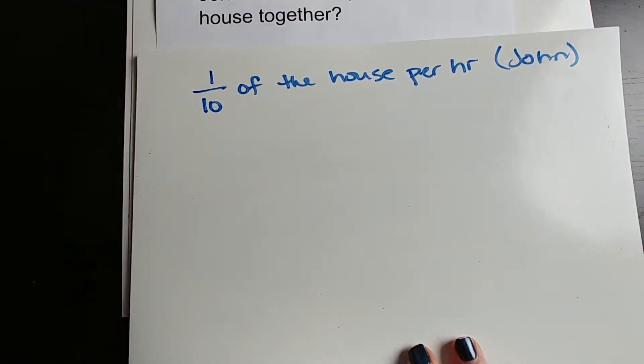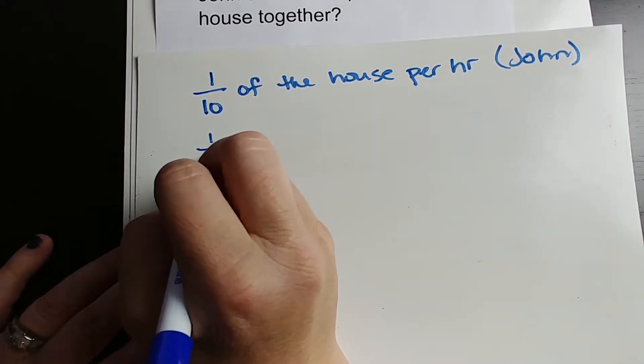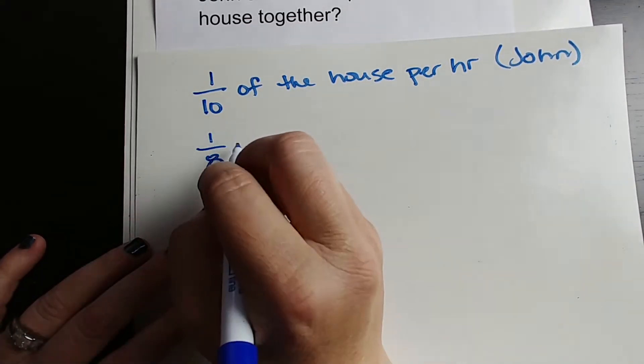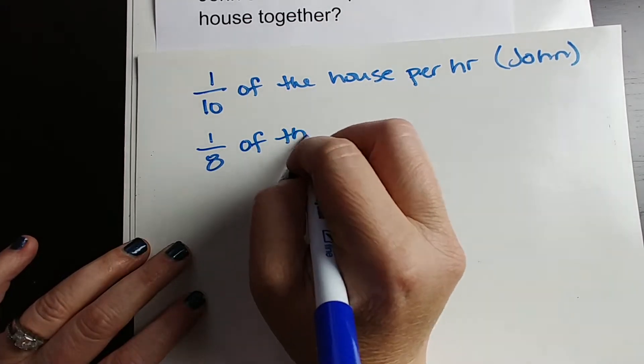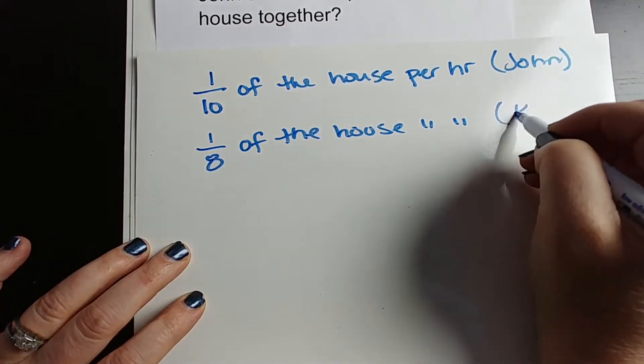And if Ken can paint the same house in 8 hours, then Ken can do 1 eighth of the house per hour. And that's Ken.